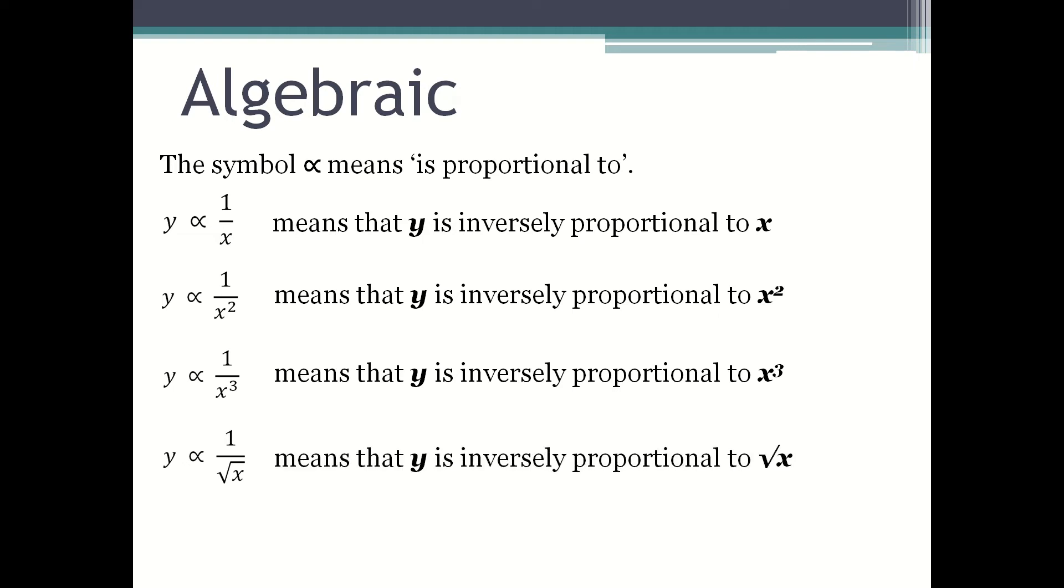y is proportional to one over x can be written as y equals k over x. y is proportional to one over x squared can be written as y equals k over x squared.